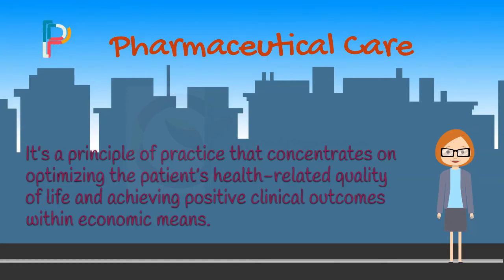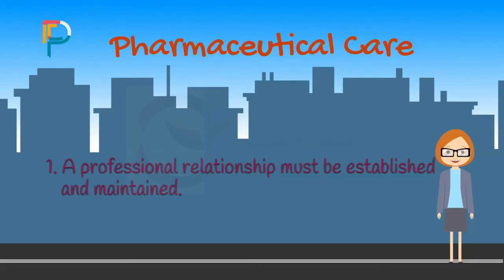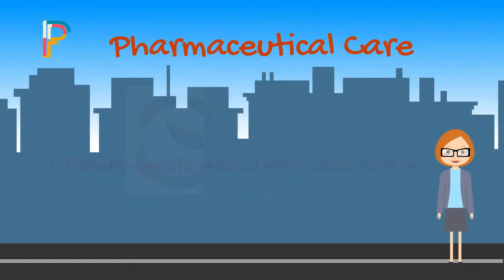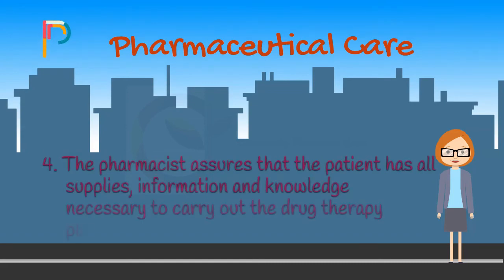According to the American Pharmaceutical Association (APHA), pharmaceutical care requires: 1. A professional relationship must be established and maintained. 2. Patient-specific medical information must be collected, organized, recorded, and maintained. 3. Patient-specific medical information must be evaluated, and a drug therapy plan developed mutually with the patient. 4. The pharmacist assures that the patient has all supplies, information, and knowledge necessary to carry out the drug therapy plan.